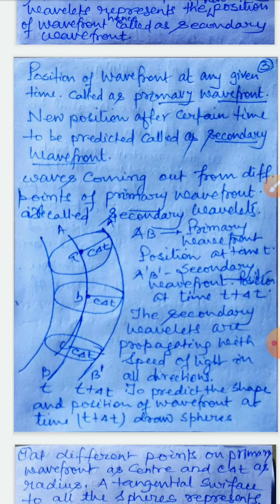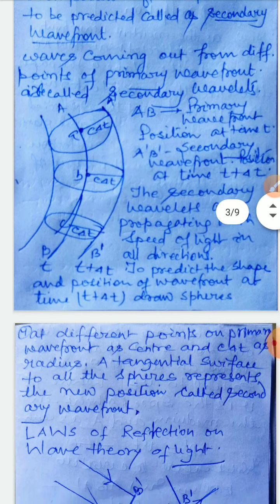Let A-B be the position of the wavefront at time t — this is the primary wavefront. After time delta-t, the secondary waves coming out from different points of the primary wavefront travel with the speed of light, covering a distance c×Δt. Taking c×Δt as radius and different points on the primary wavefront as centers, you draw spheres. The surface passing tangentially to these spheres in the forward direction represents the secondary wavefront.